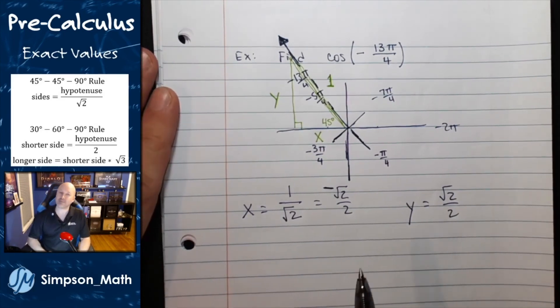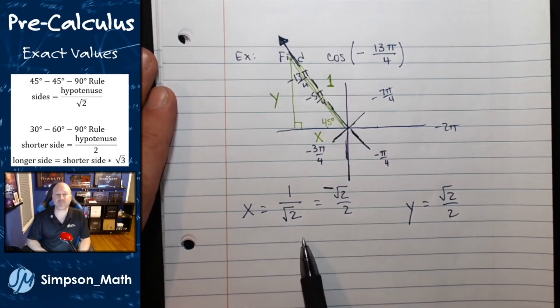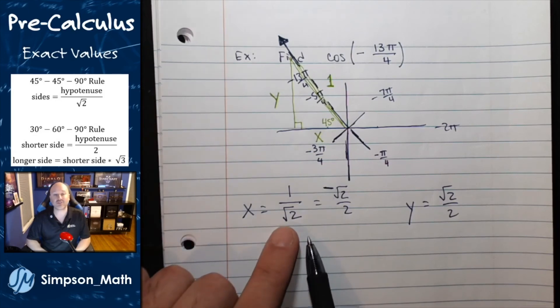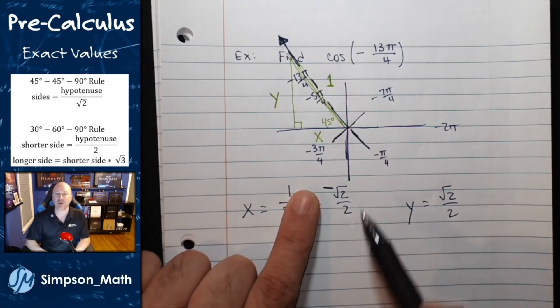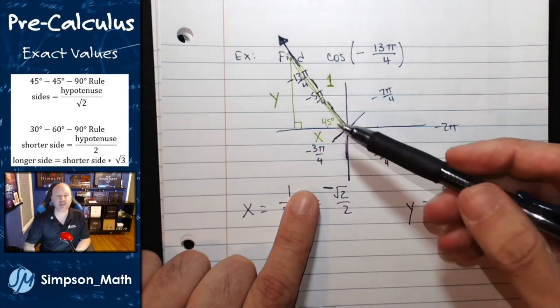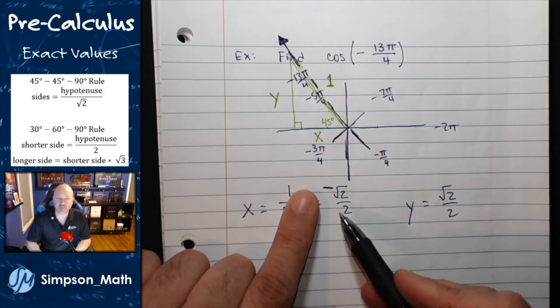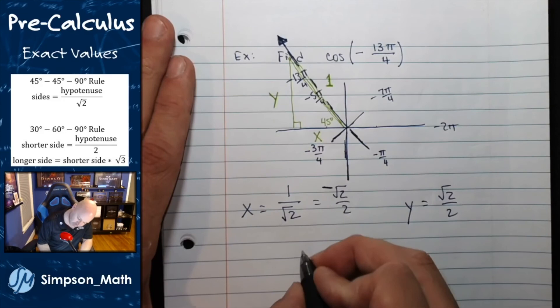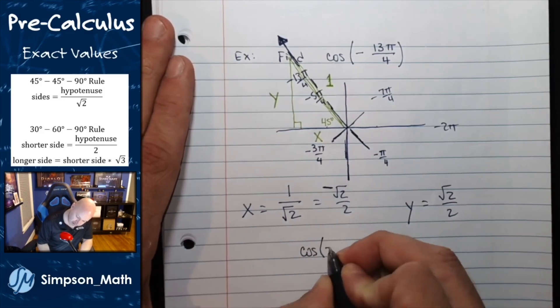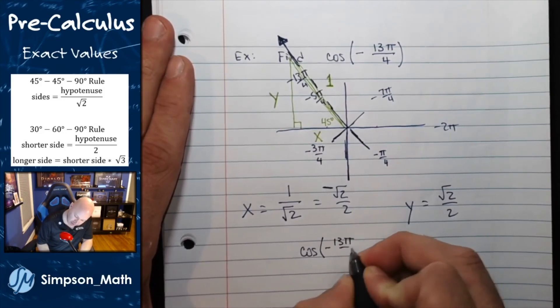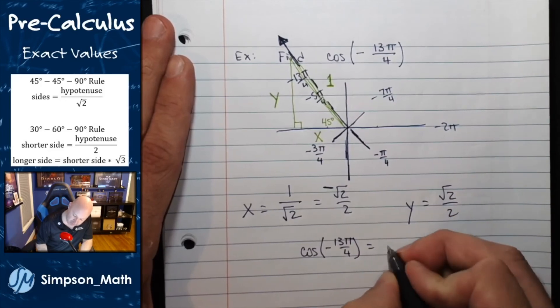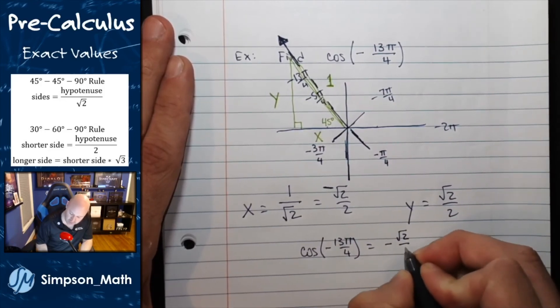Cosine is simply the x term. You could think of it as the true definition, the x divided by the radius. But when the radius is just one, it's just the x value. So, cosine of negative 13 pi fourths is equivalent to negative root two over two.